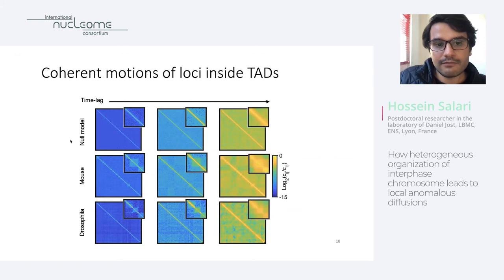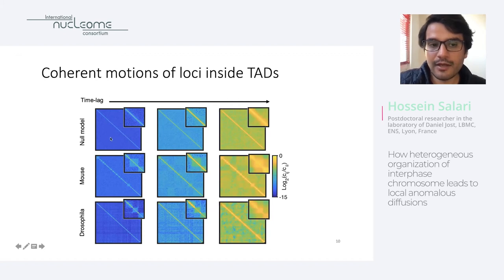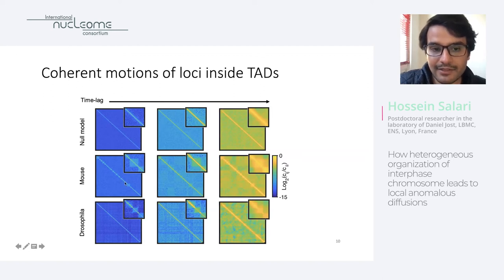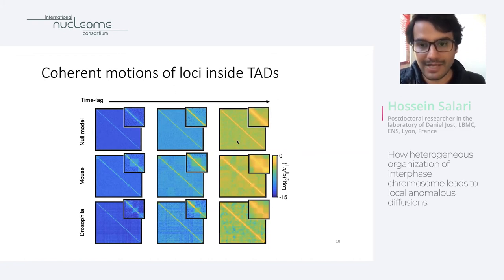Another interesting result of our model is a coherent motion of loci inside the TADs. This map shows the pair correlation between the motion of two loci — each component represents the correlation of motion between two different loci. For both mouse and Drosophila, we see clearly much higher correlation inside the TADs — intra-TADs — compared to inter-TADs. This effect is stronger for Drosophila than for mouse. By increasing the time, the correlation increases, reflecting the motion of the center of mass.